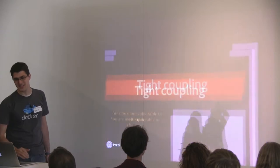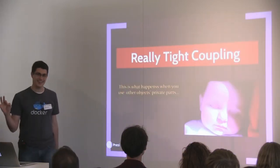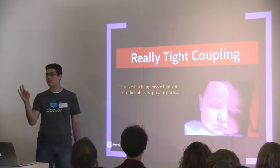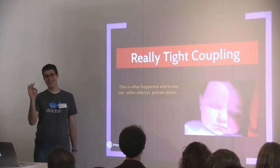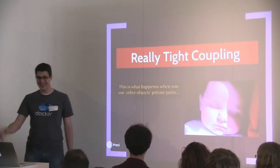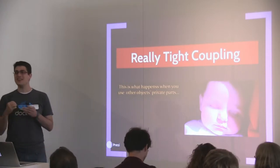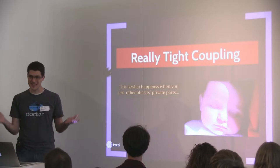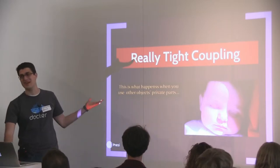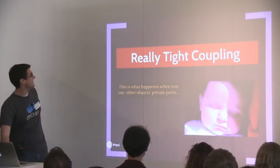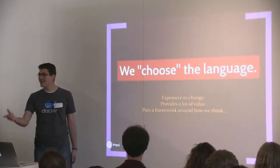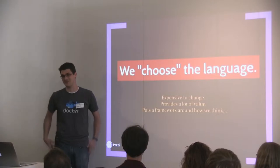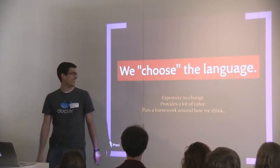If your coupling gets too tight, it's possible you'll access each other's private parts. You may run into a new instantiation of this interface — that's inheritance. Multiple inheritance, which is pretty scary stuff. So be careful.